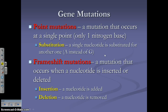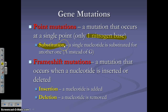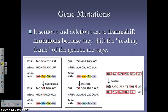There are point mutations and frameshift mutations. Point mutations occur at one nitrogen base — for example, a substitution where one nucleotide is swapped for another. Some point mutations can cause frameshift mutations, where the entire reading frame is shifted. An insertion, where a nitrogen base is inserted where it shouldn't be, or a deletion, where a base is removed, can each cause a frameshift mutation that shifts the reading frame of the genetic message.